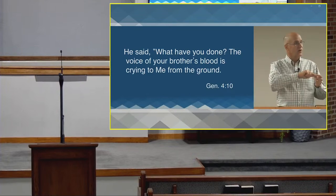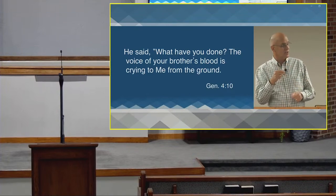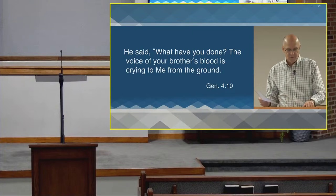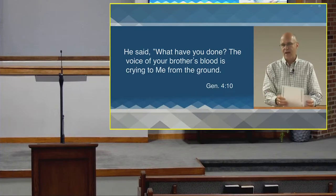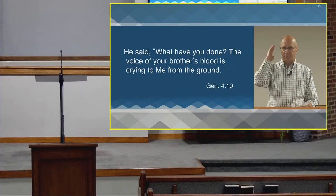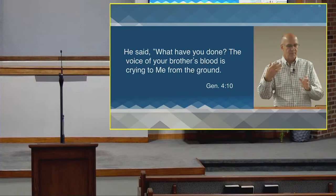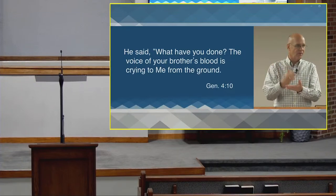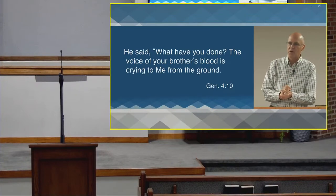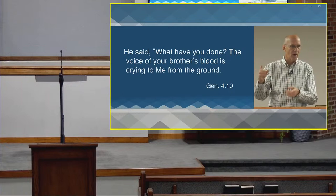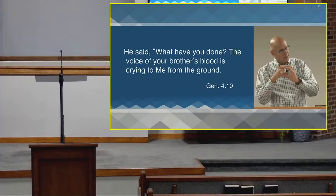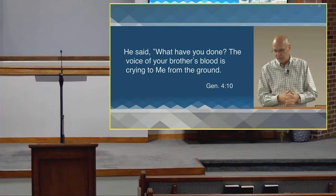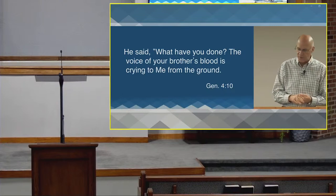An eye for an eye. Later on in Genesis chapter 9, verse 6, God will articulate the law of capital punishment. Here he demonstrates the idea that he is allowed to judge Cain, and there will be a judgment for capital punishment. But the law for capital punishment is articulated later — we'll get there when we get to Genesis chapter 9.